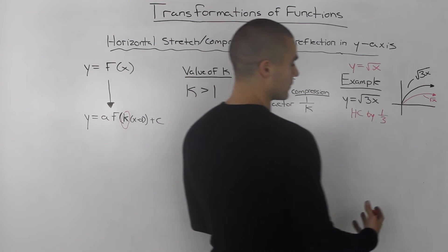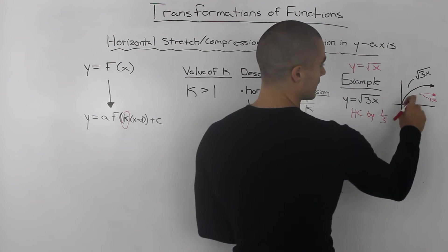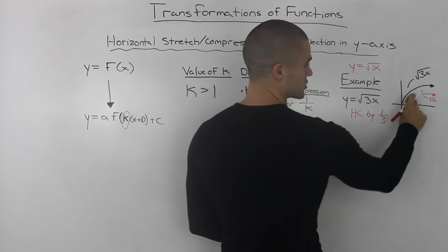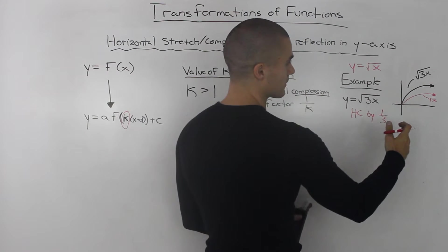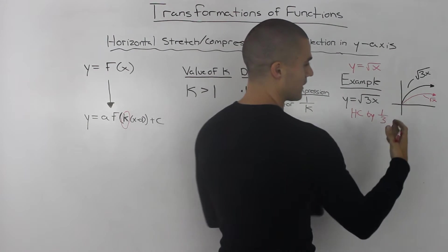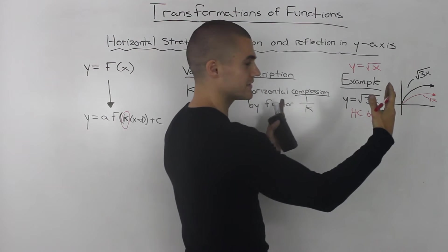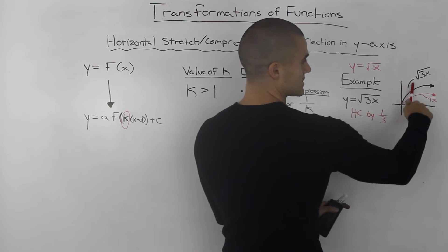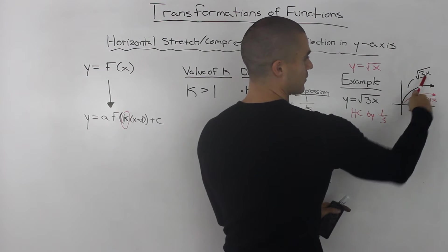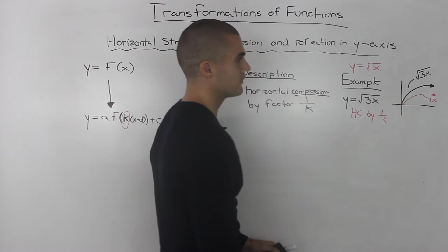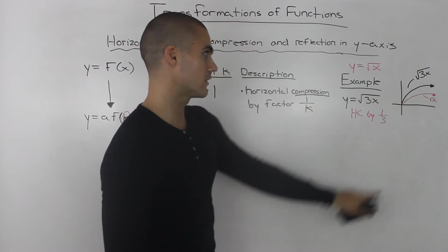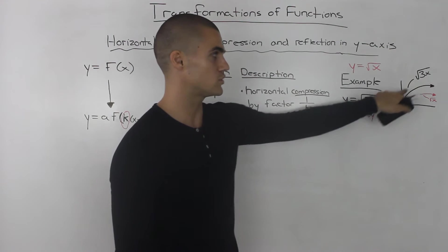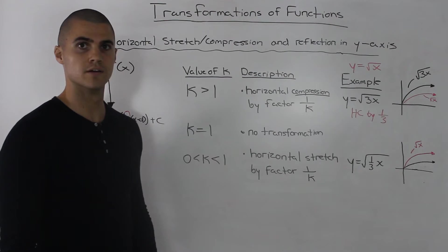Graphically, we have our base parent function, the square root of x, shown in red. When we horizontally compress it, we get the square root of 3x. You can make a table of values and graph both on the same graph to verify that result.